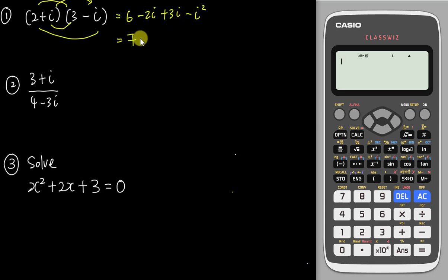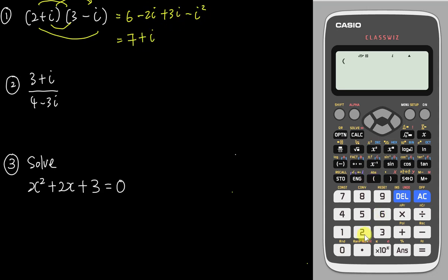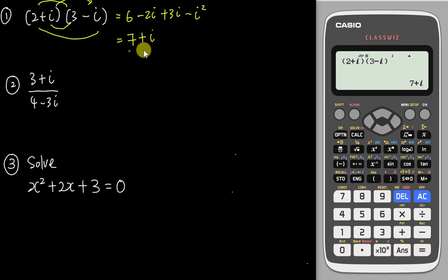So 6 plus 1 gives 7, and negative 2i plus 3i gives positive i. The answer is 7 + i. And the good thing about this calculator is you can type in exactly the same expression and it will straight away give you 7 + i.